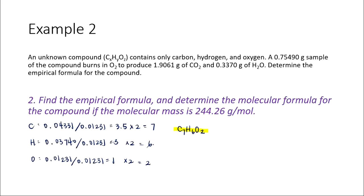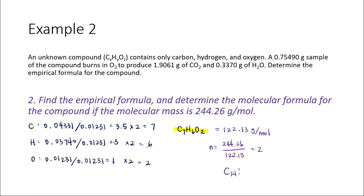The second part of the problem asks us to determine the molecular formula if the molecular mass is 244.26 grams per mole. We find the molar mass of C7H6O2, which is 122.13 grams per mole, and calculate n = 244.26 / 122.13 = 2. Distributing that to the empirical formula gives a molecular formula of C14H12O4.